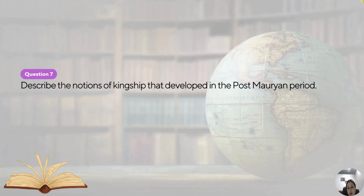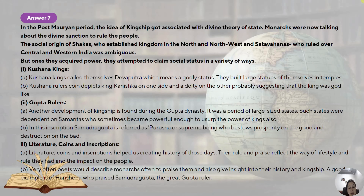Question number seven: describe the notions of kingship that developed in the post-Mauryan period. Post-Mauryan means after the Mauryans — the Guptas and Kushanas ruled India. In the post-Mauryan period, the idea of kingship got associated with the divine theory of state. Kings started getting legitimacy of their rule through divine kingship — they were trying to get some sort of connection with divine God. The social origin of the Shakas, who established kingdoms in the north and northwest, and the Satavahanas, who ruled over central-western India, was ambiguous, but once they acquired power they attempted to claim social status in a variety of ways.